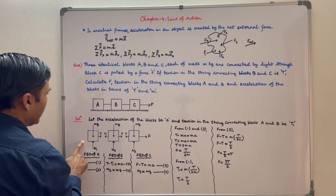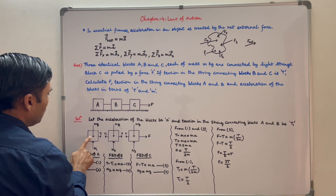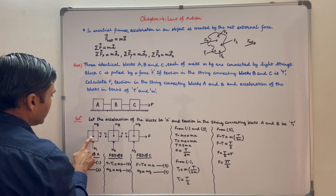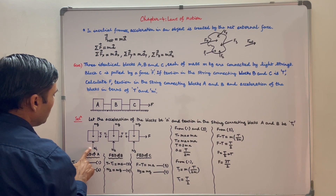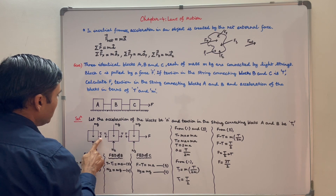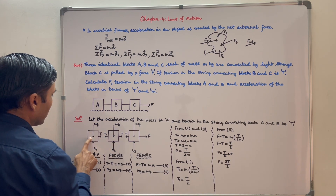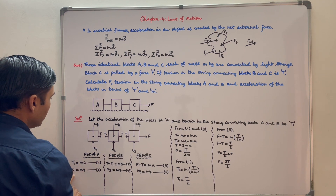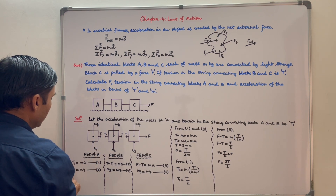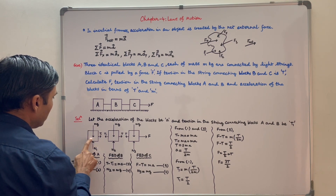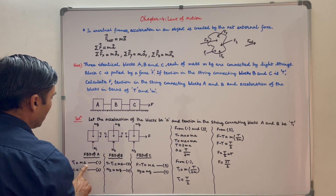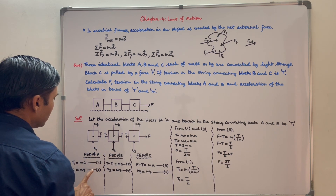This is FBD of block A. Weight of this block is Mg, which acts at its geometrical center. N1 is normal reaction by the floor on this block. Tension T1 is created by this string on this block. So N1 is equal to Mg, and T1 is equal to mass of this block into acceleration of this block. This is equation 1 and this is equation 2.